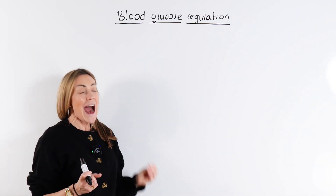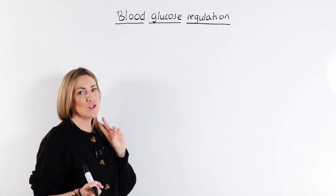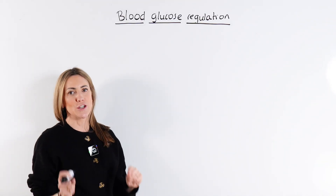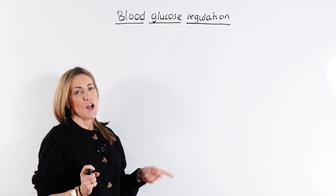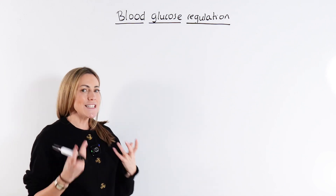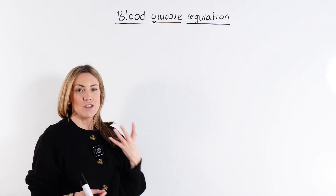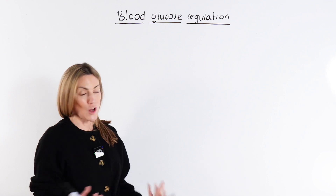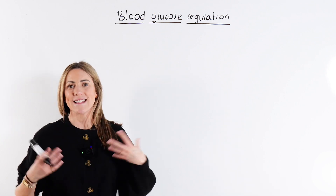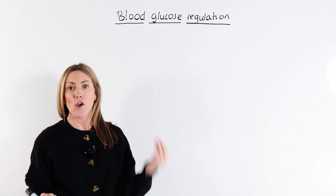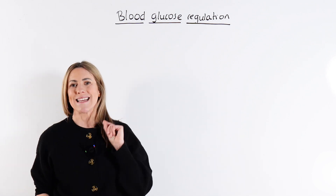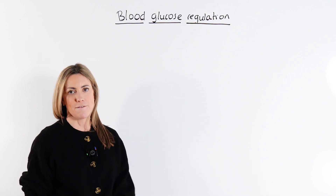Do you know how those two hormones regulate your blood glucose concentration? This is from module six, that big module that is content heavy in AQA. This is an example of homeostasis that uses negative feedback.